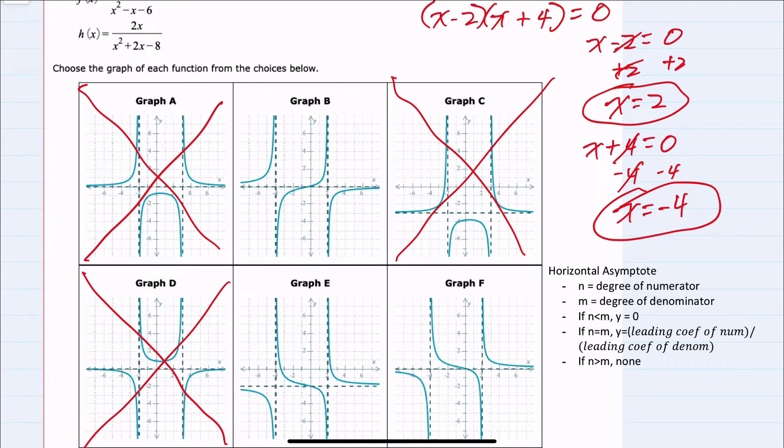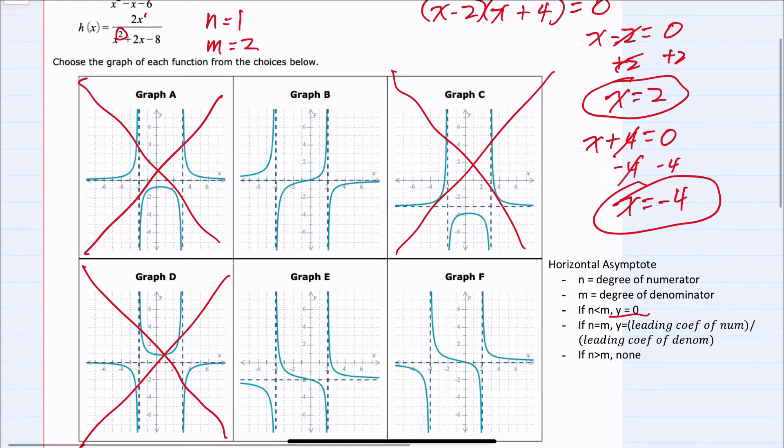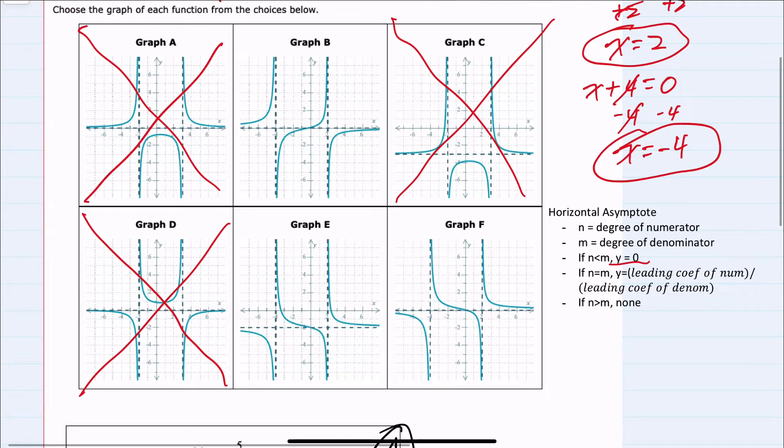Moving now to horizontal asymptotes. n is the degree of the numerator, which here is one. m is the degree of the denominator, which here is two. So n is less than m, y equals zero is our horizontal asymptote. So eliminating the only graph left that doesn't have a horizontal asymptote at y equals zero, I would be eliminating e.